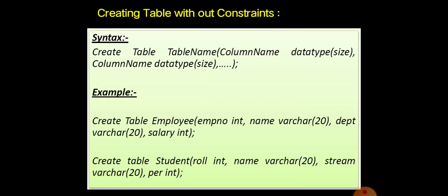This is the syntax and example of creating a table without constraints. Look at the syntax to create a table. Here, CREATE is a command, TABLE is a clause, and the table name and all other details are arguments of a table. The data type specifies the type of value a column can have. The size indicates how many digits or characters can be in a value of a particular column. Each column is separated with a comma.